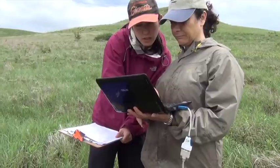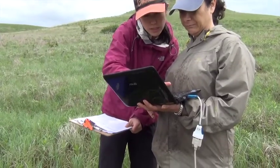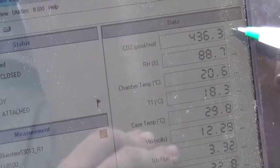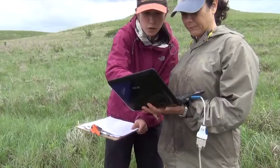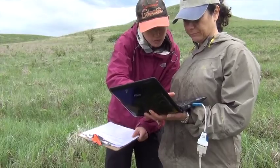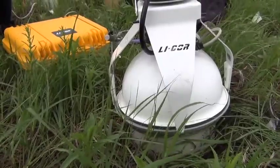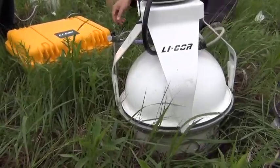While the IRGA is measuring, we can look at the data in real time. The instrument provides a readout of CO2 concentration, as well as other factors like temperature and humidity that help explain what we are seeing. Once the measurement is done, the chamber will open and we'll move on to the next collar.